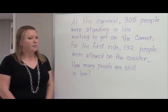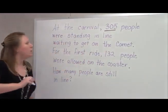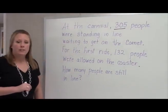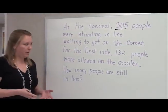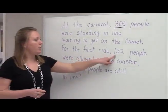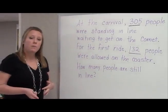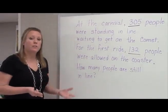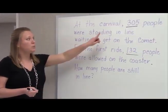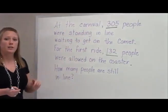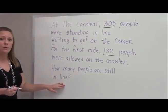So let's go back and take a look at my problem. It says that 305 people were standing in line waiting to get on. That tells me that's the total number of people that we're starting with. Then on the first ride, 132 people were able to get on. So that means some people got on the roller coaster, but there's still some left waiting in line. That tells me that I can subtract 305 and 132 to find how many people are still waiting to get on the roller coaster.